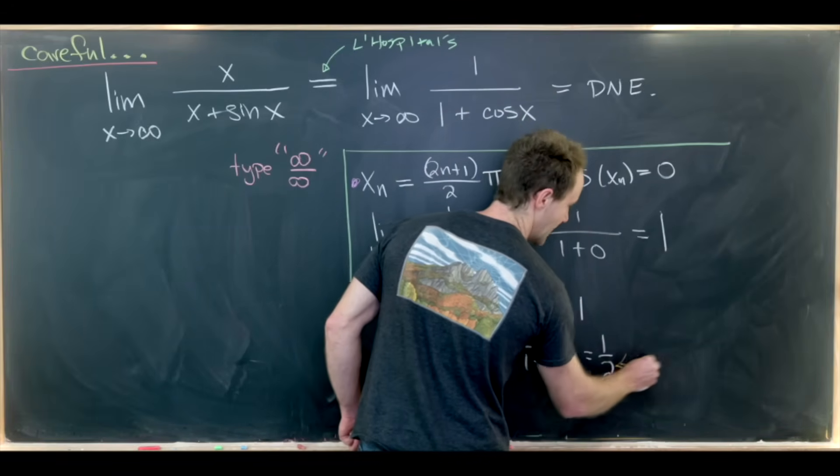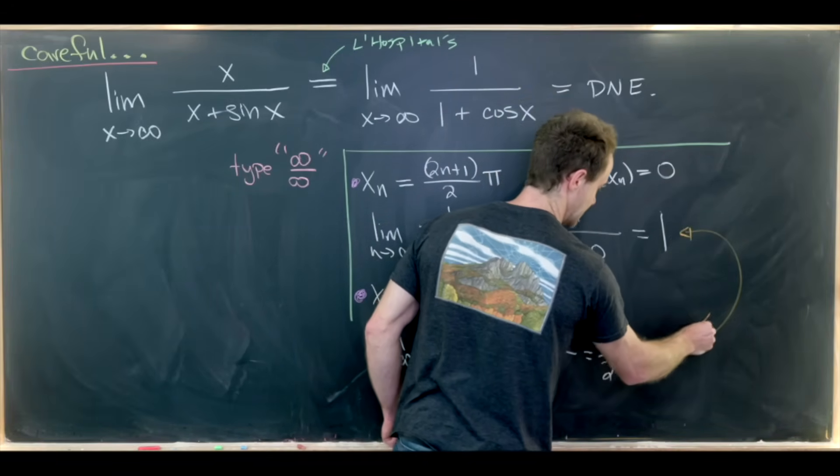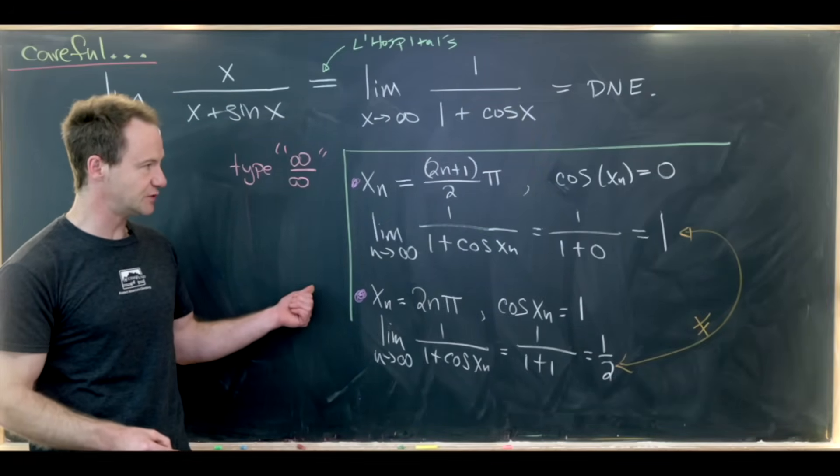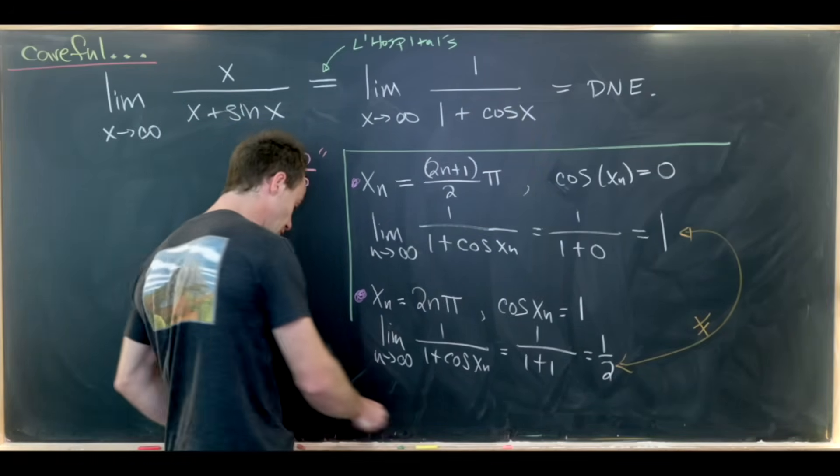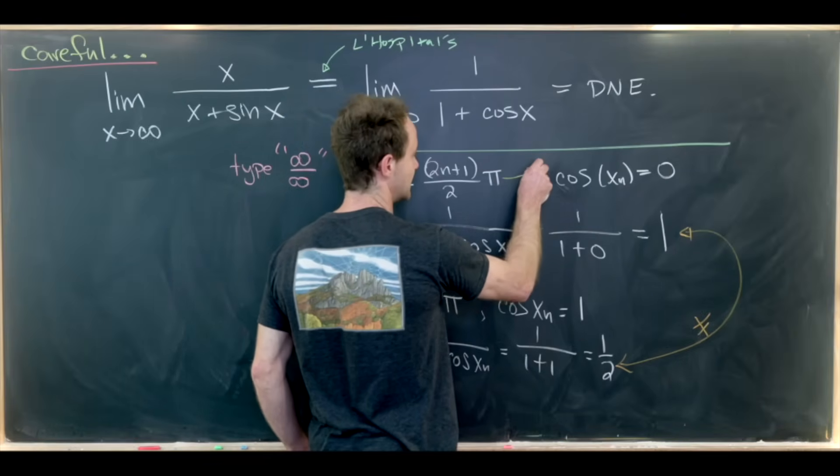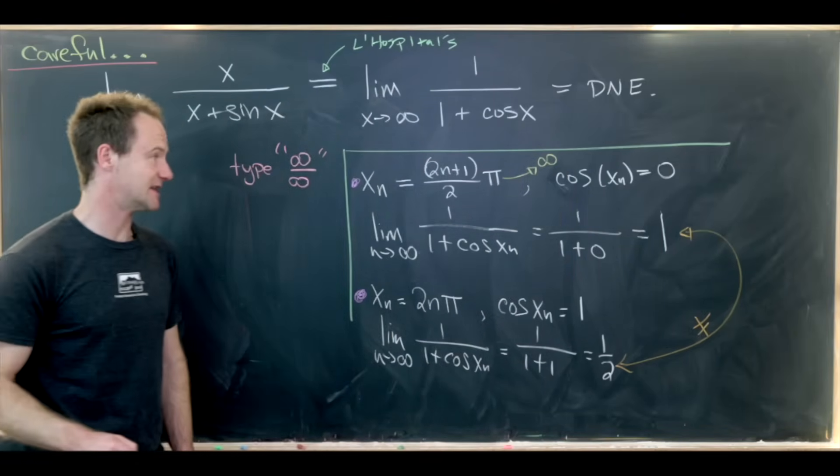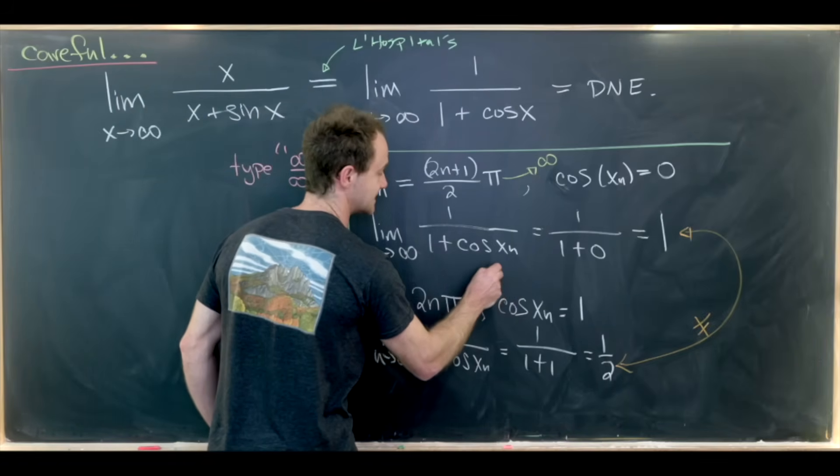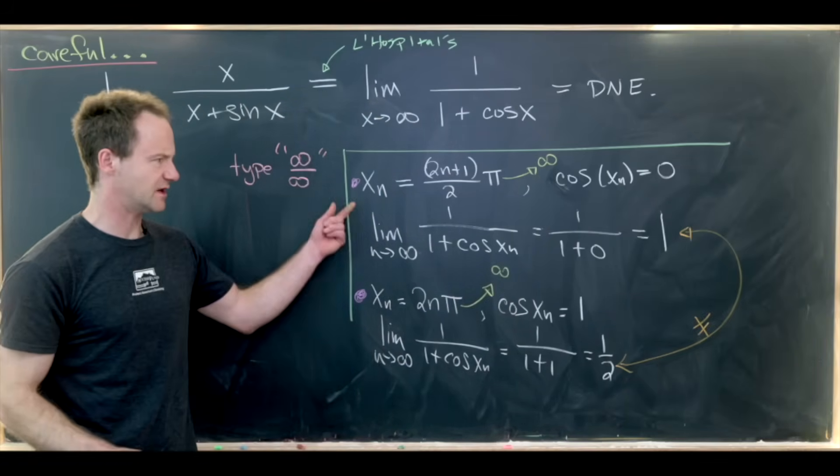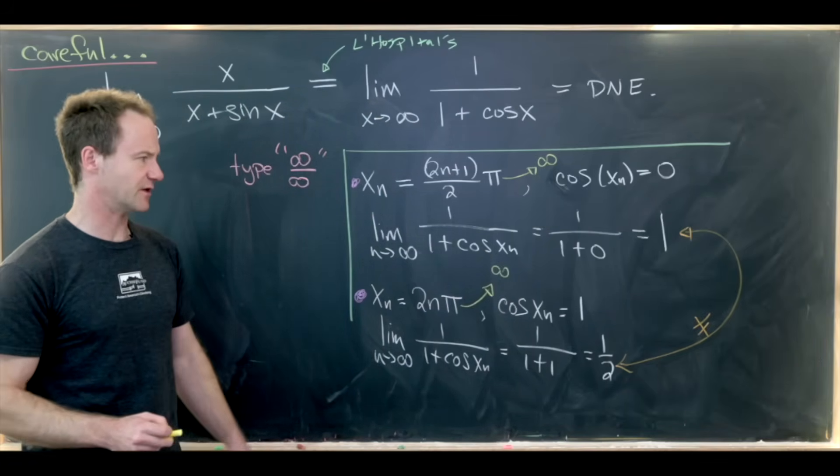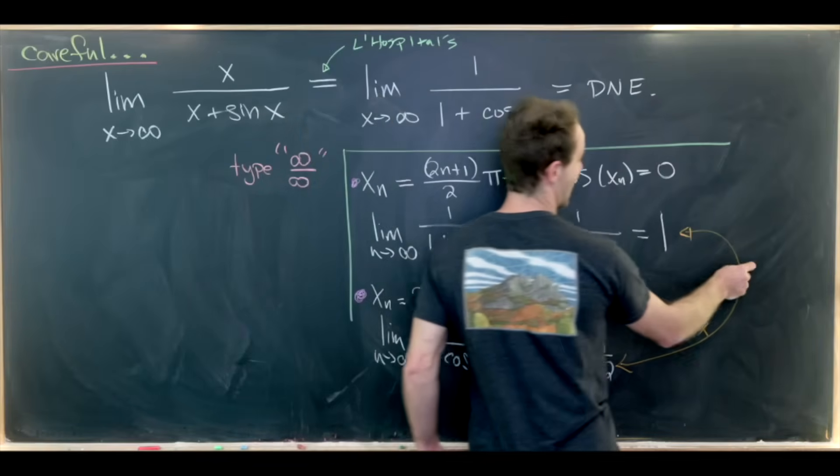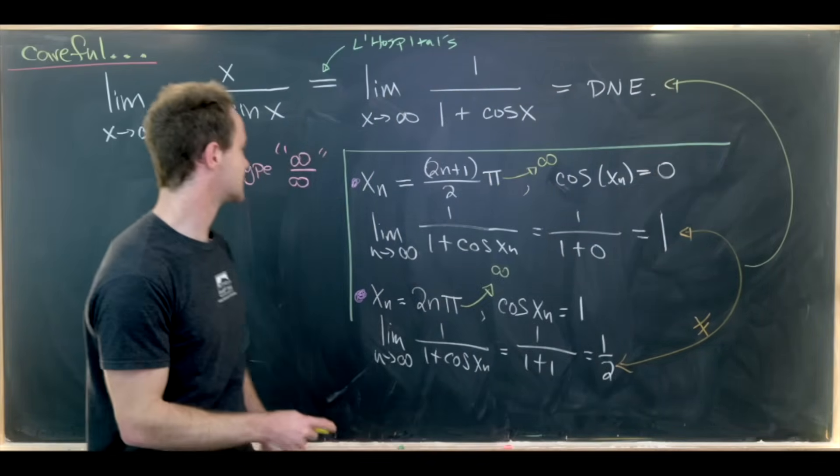But now let's look at this. 1 half is most definitely not equal to 1, but since we were able to find two sequences that both tended to infinity, so notice that x sub n tends to infinity as n tends to infinity in both of these cases, but yet we got different values for the limit. That tells us that in fact this limit does not exist.